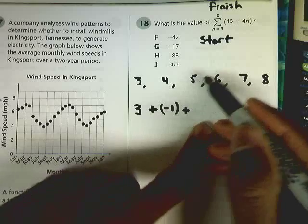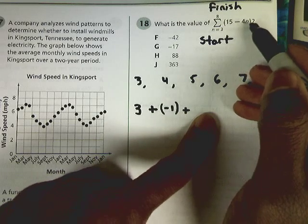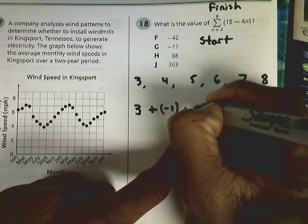Now we need to plug in 5 into this problem. We have 5 times 4, which is just 20. And then 15 minus 20, that's just going to give us a negative 5.